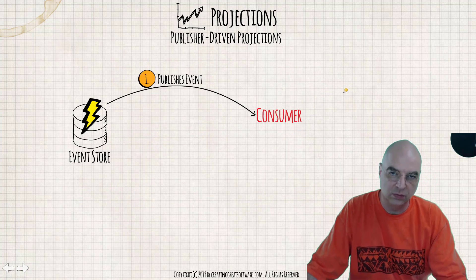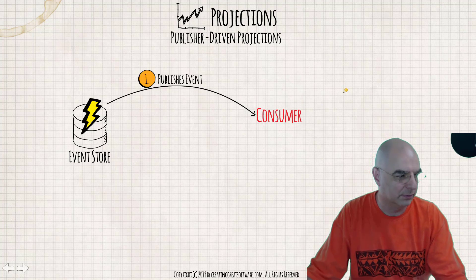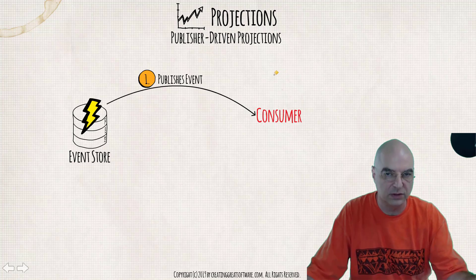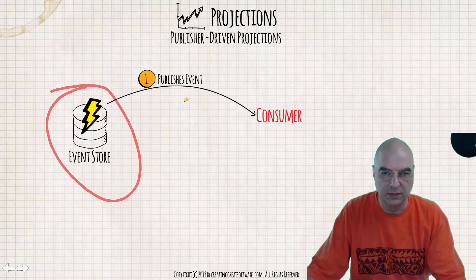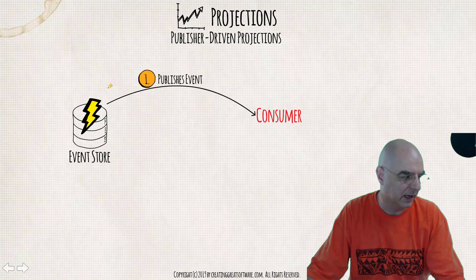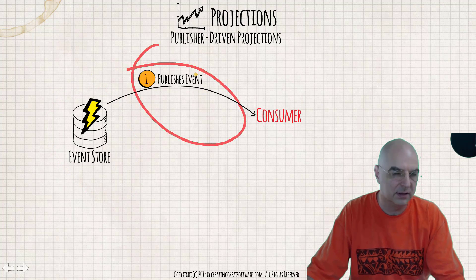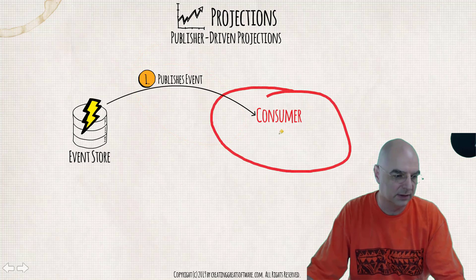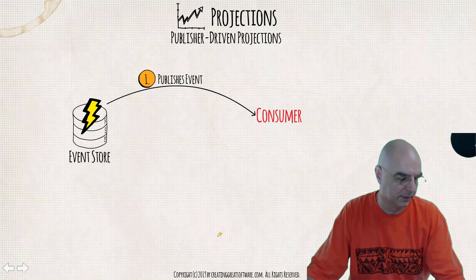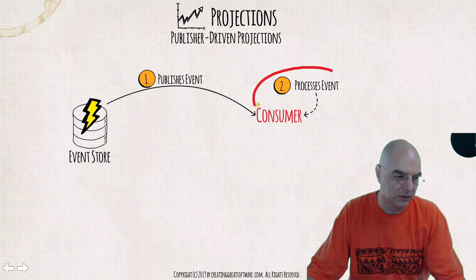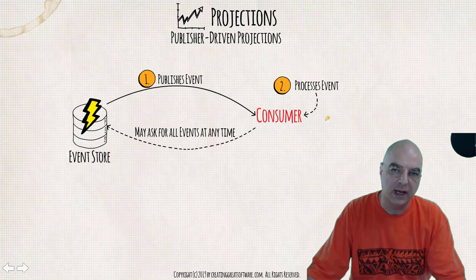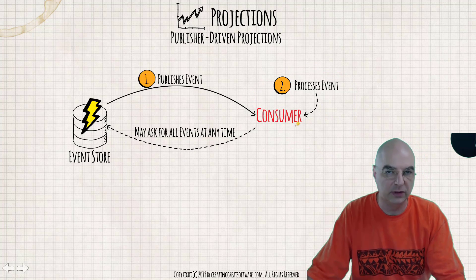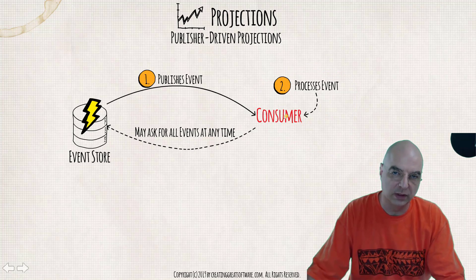The third type is publisher-driven projections. We're actually implementing this in conjunction with the first type as well. The event store commits a domain event or collection of domain events, and after that is committed, it will go ahead and publish the event. The consumer is one of the subscribers to this event and gets notified. The consumer then processes the domain event just like before, and it may or may not ask for additional events at any point in time — it's very similar to the consumer-driven approach.